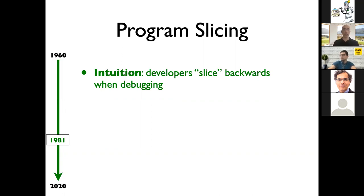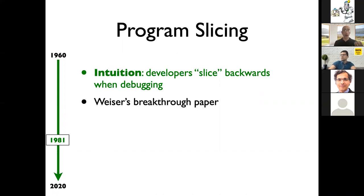The intuition here was that developers slice backwards when debugging. They observe a failure — a manifestation of a problem in the code — and basically go from that manifestation back through the program to find the root cause. Weiser had this very interesting idea in 1981, about 40 years ago. The breakthrough paper was this idea of trying to do automatically this sort of process of slicing backwards through the code.